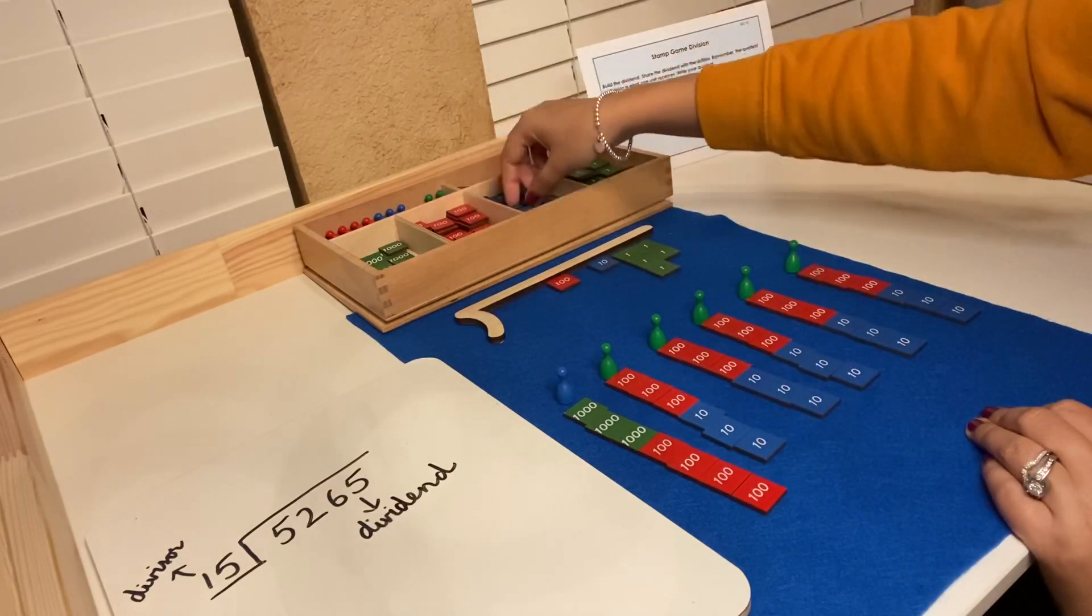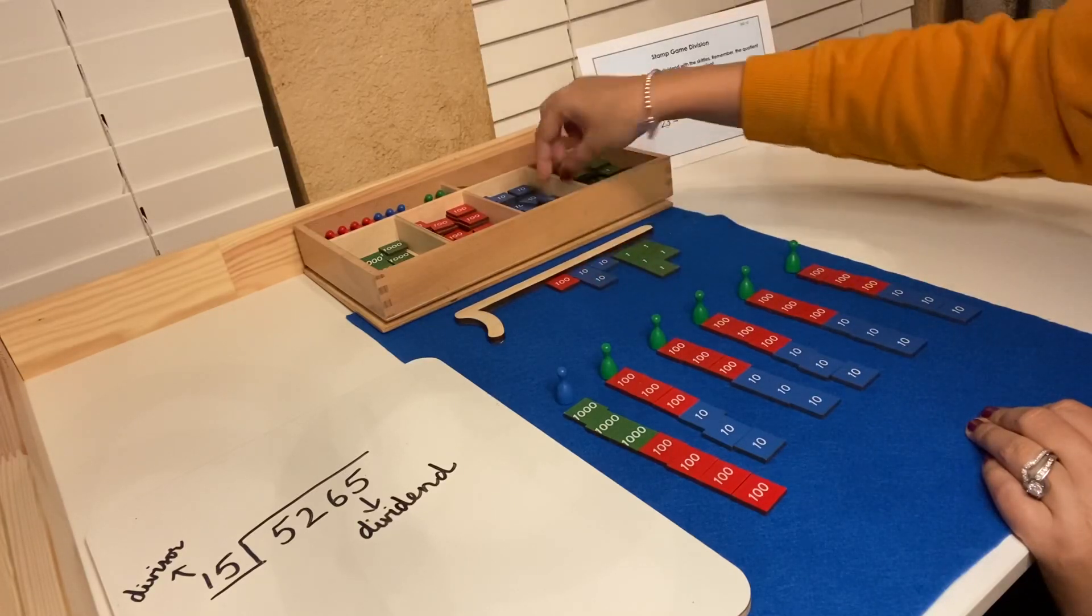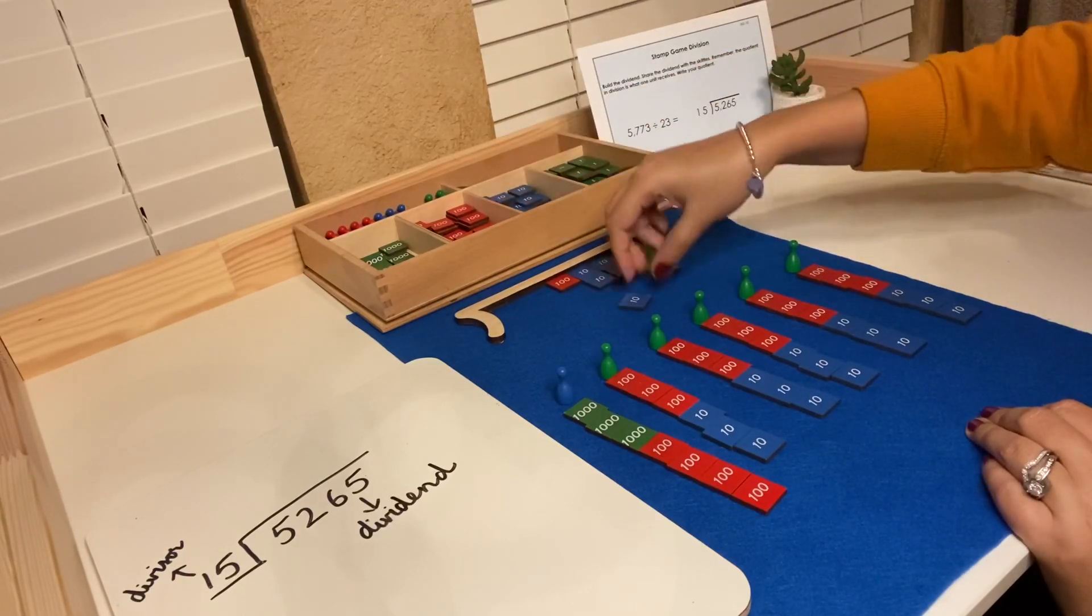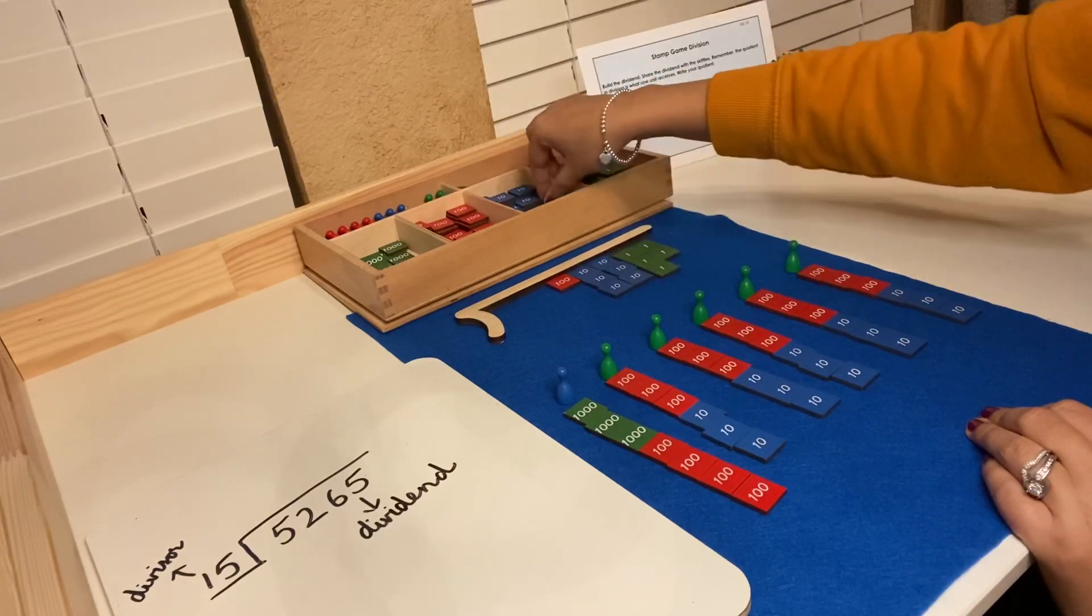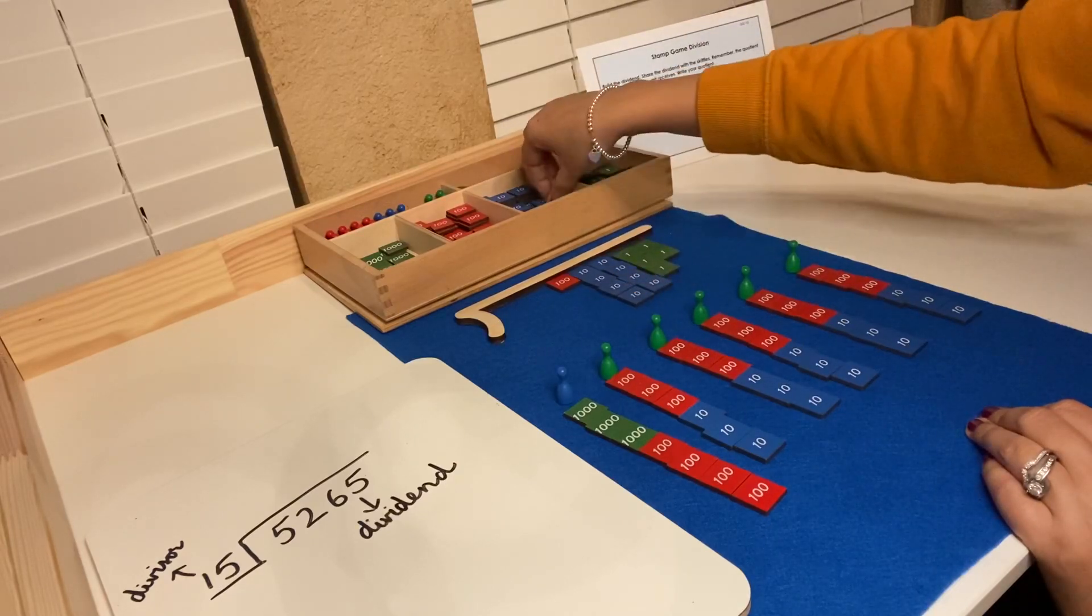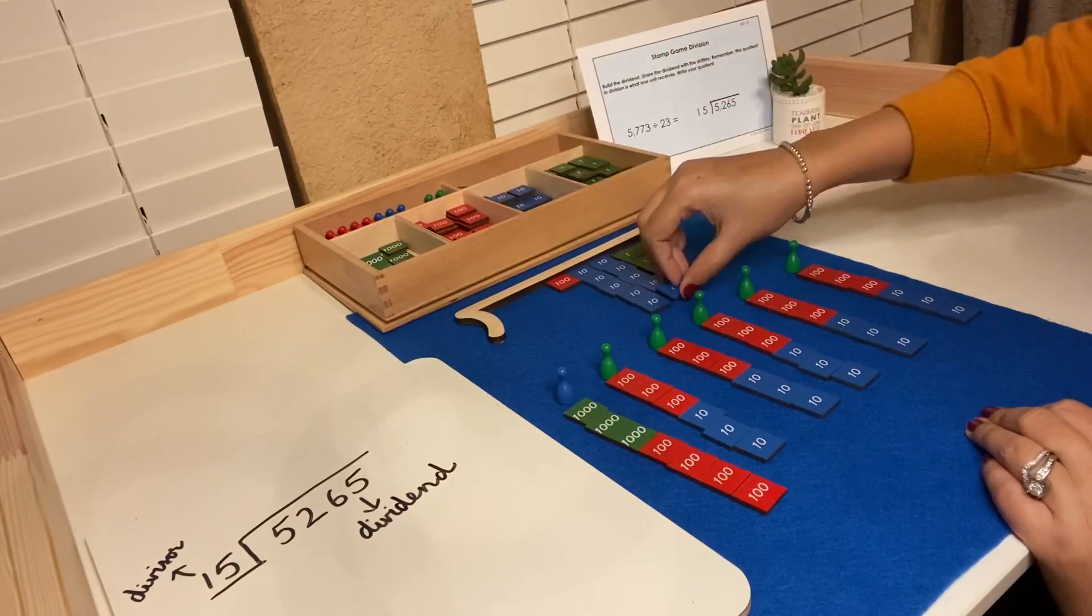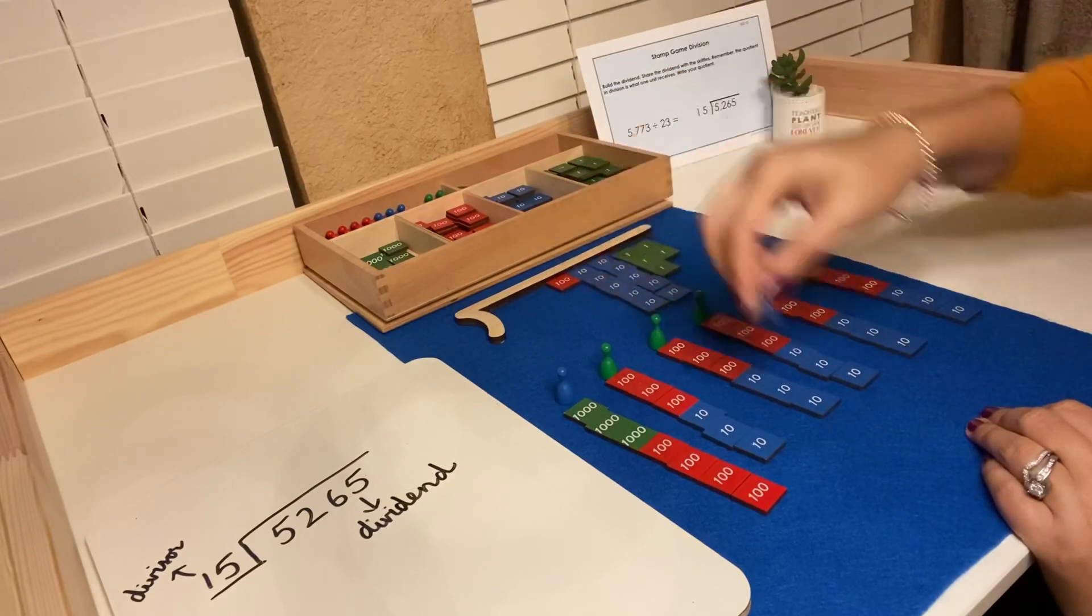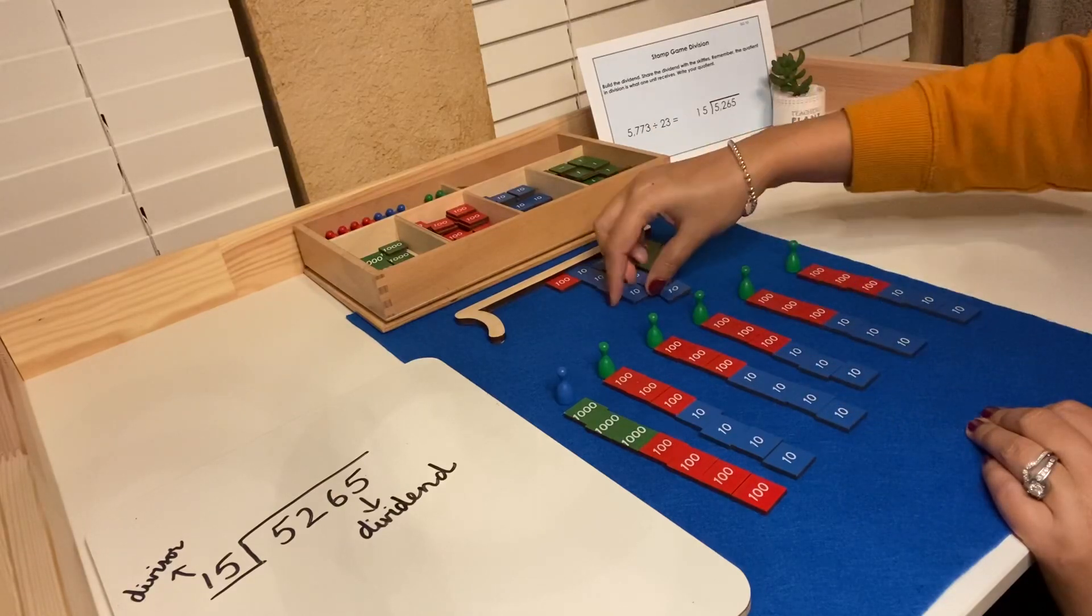I'll exchange this hundred for ten tens. One, two, three, four, five, six, seven, eight, nine, ten. Everyone continues to receive their fair share.